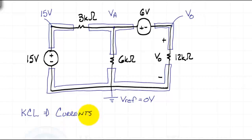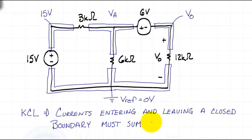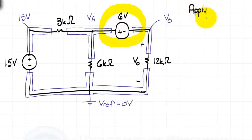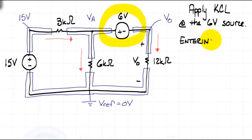So we cannot directly write node equations at nodes O and A. We should recall the more formal statement of Kirchhoff's current law: currents entering and leaving a closed boundary must sum to 0. If we treat the 6 volt source as a boundary rather than an element, we can write node equations for all the currents that enter and leave the voltage source, and KCL will still be true. Sometimes this boundary is called a supernode. Before proceeding, we should define the current directions for our unknown currents. The direction of the current through the 12 kilohm resistor has already been defined by the voltage V sub O — in a resistor, current flows from the terminal assigned the positive sign to the terminal assigned the negative sign. This is the passive sign convention.